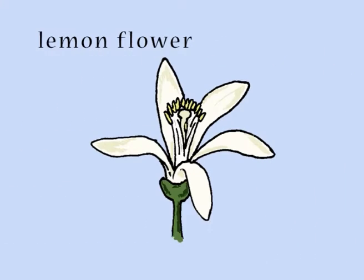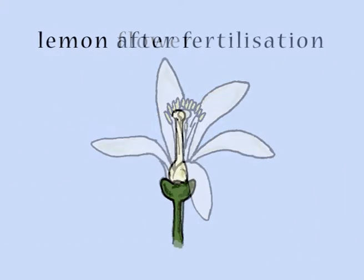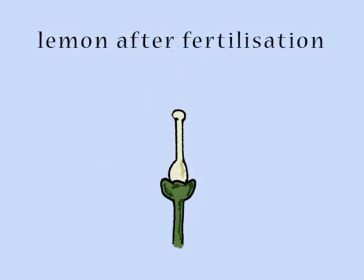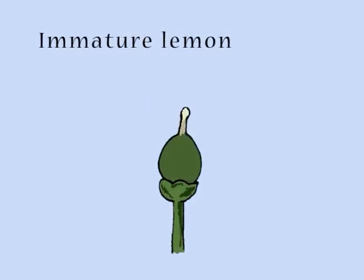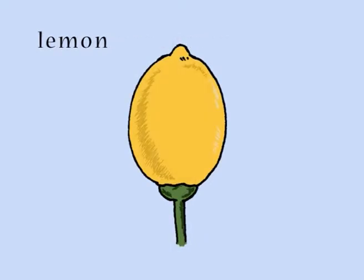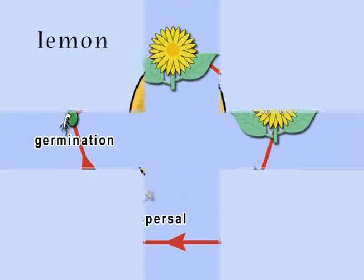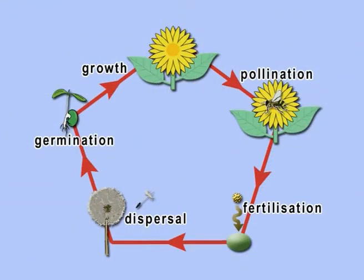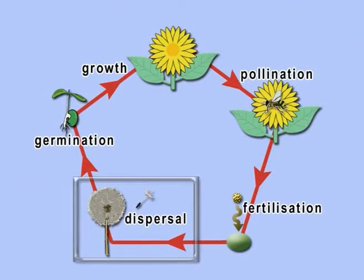Once fertilisation has occurred, the flower starts to die, as the ovary develops into a fruit containing seeds. The seeds must be dispersed, or carried away from the parent plant, so they have enough space to sprout and grow into new plants.